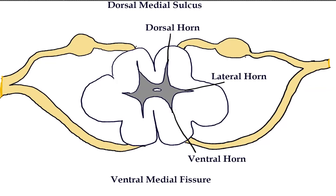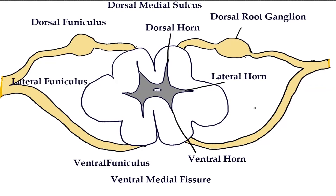Another structure that we have is the dorsal root ganglion — this bulb out here that I mentioned. It's one way to tell the dorsal side from the ventral side. This is going to house all the sensory neuron cell bodies. We also have ventral, lateral, and dorsal funiculi — funiculus for singular — and that is the white matter that is associated with each one of the horns. In the funiculus is where you're going to find the myelinated axons of the neuron. While in the gray matter, we're going to find either the axon terminals or the cell body and dendrites.